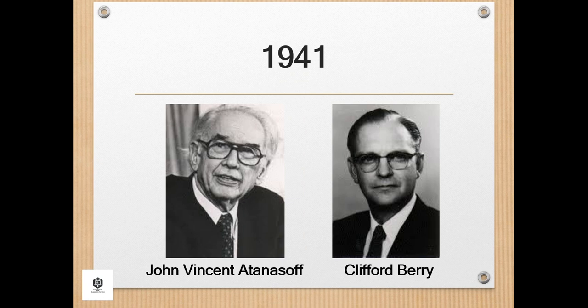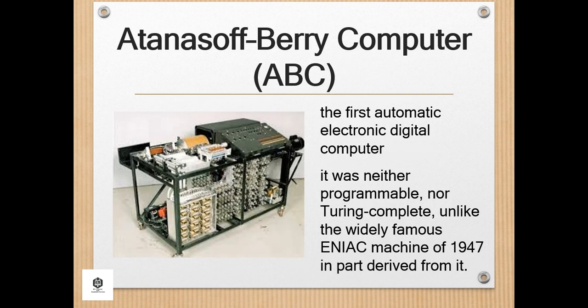During 1941, John Vincent Atanasoff and his graduate student Clifford Berry designed a computer that could solve 29 equations simultaneously. This marks the first time a computer was able to store information on its main memory. The Atanasoff-Berry Computer, or ABC, was the first automatic electronic digital computer, though its priority is debated among historians because it was neither programmable nor Turing-complete, unlike the widely famous ENIAC machine of 1947, which was partly derived from it.